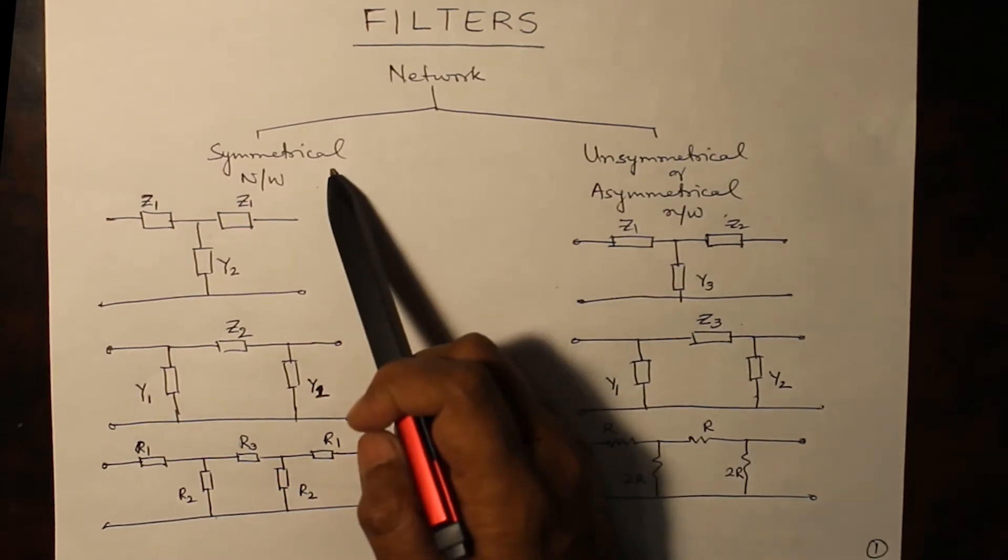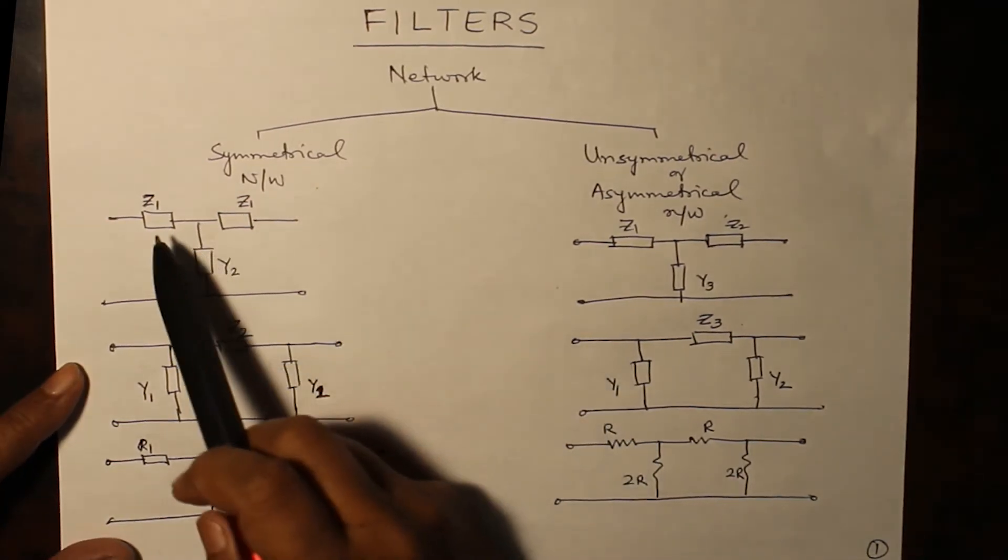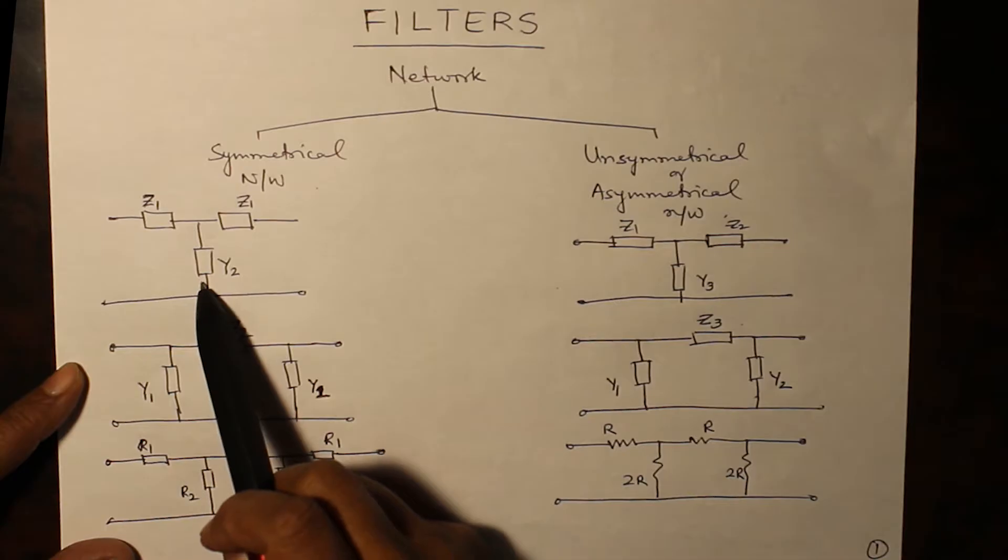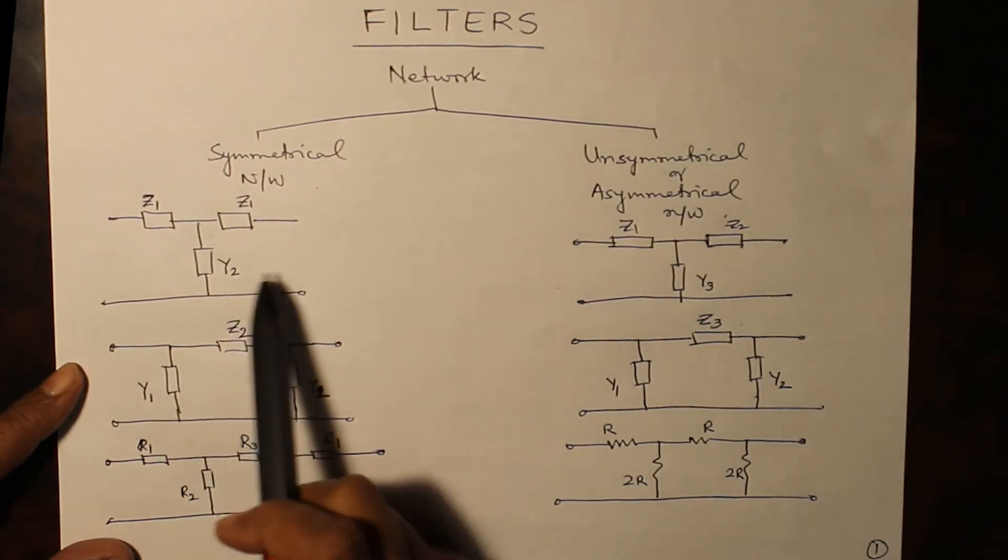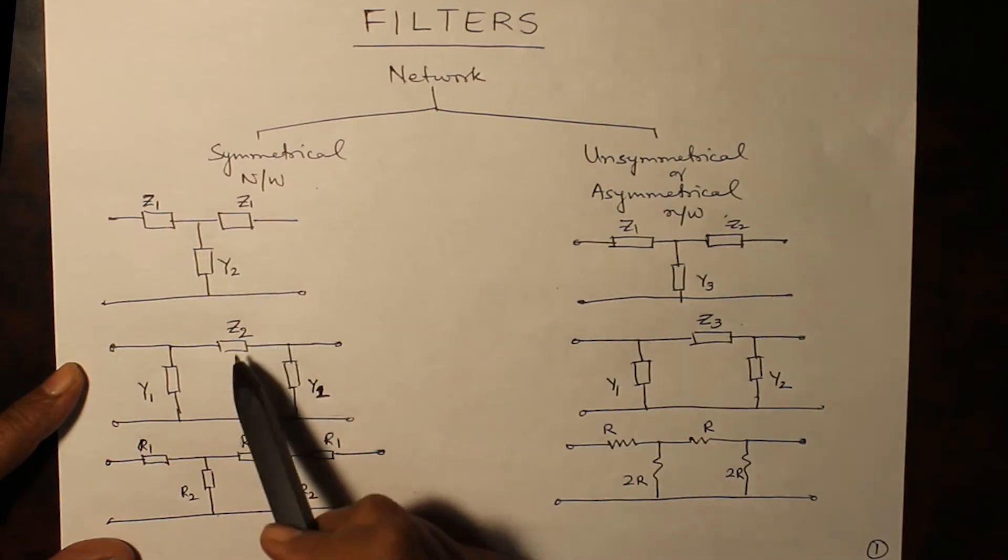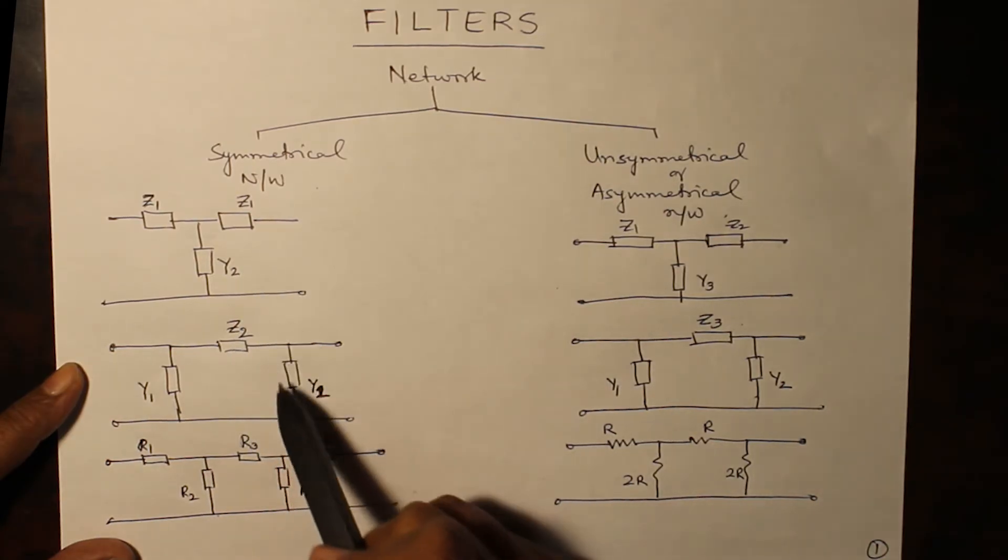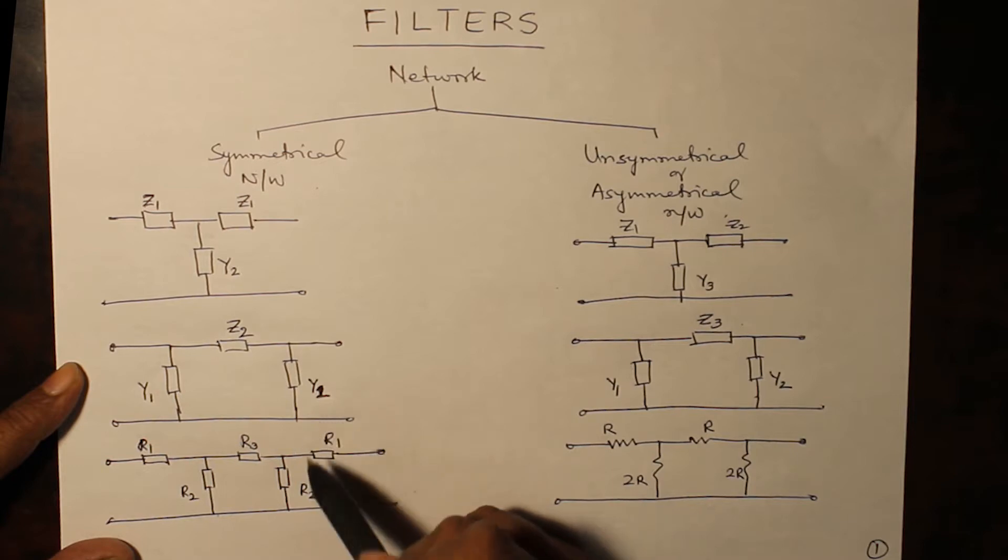A network is said to be symmetrical if we have elements which are symmetrically placed. If you put a mirror here, a symmetrical image can be obtained. Similarly, this is a T network, this is a pi network, they are symmetrical networks.